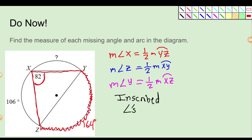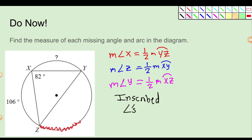Half of 164 is 82 — that's all I did to calculate it, just doubled it. So that means the red arc we're talking about: if we multiply the angle of 82 by two, you're going to get 164. That's all we did.